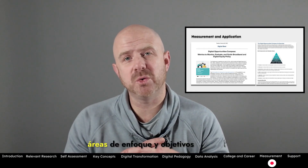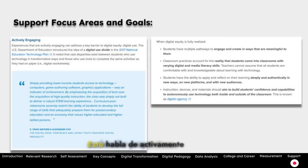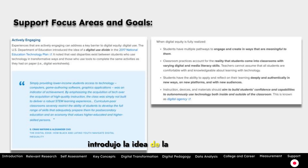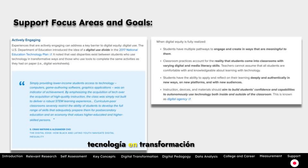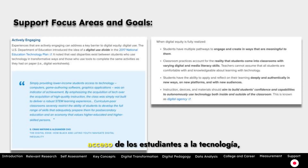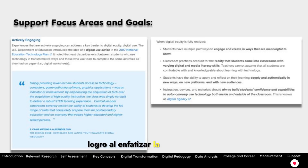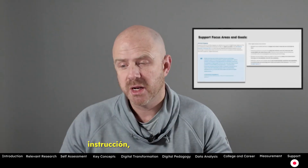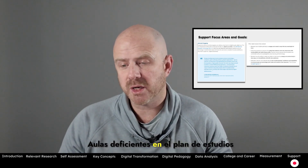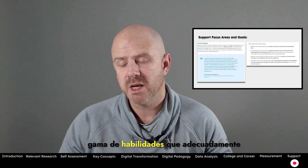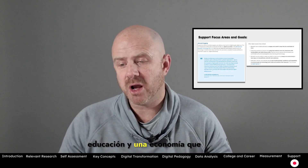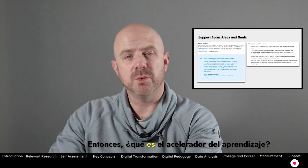Now let's do our final piece — support focus areas and goals, back to a resource from the Learning Accelerator. Experiences that are actively engaging can address a key barrier to digital equity. The U.S. Department of Education introduced the idea of the digital use divide in the 2017 National Education Technology Plan, noting that vast disparities exist between students who use technology in transformative ways and those who use tools to complete the same activities as on paper — digital worksheets. Simply providing low-income students access to technology such as computers, game authoring software, and graphics applications was used as an indicator of achievement. By emphasizing acquisition of tech over high-quality instruction, the class was simply not built to deliver a robust STEM learning experience. Curriculum-poor classrooms severely restrict students' ability to develop the full range of skills that prepare them for post-secondary education in an economy that values higher-educated and higher-skilled persons.